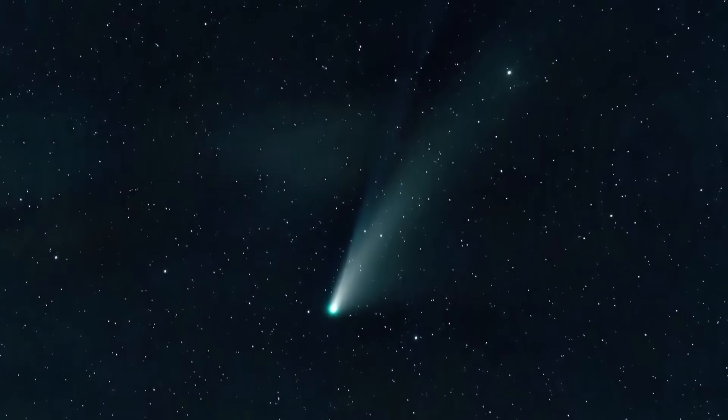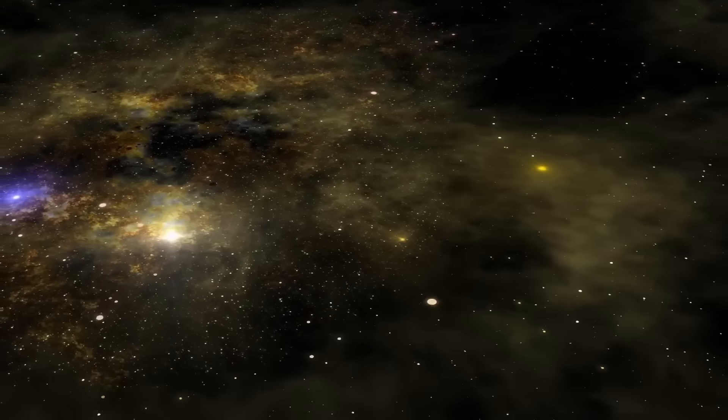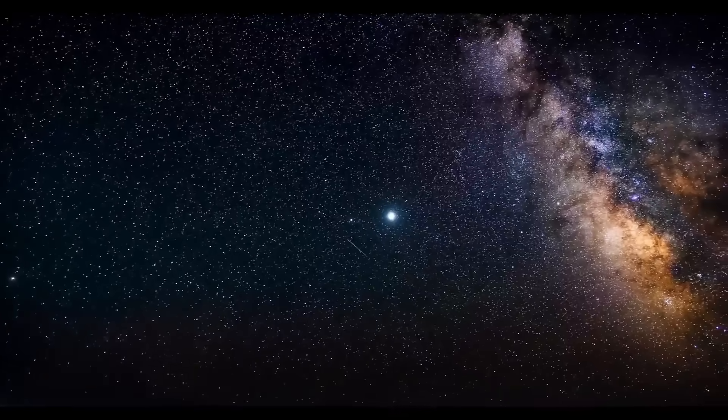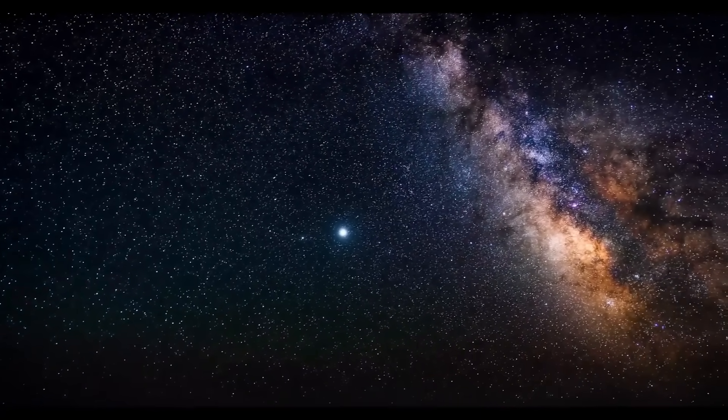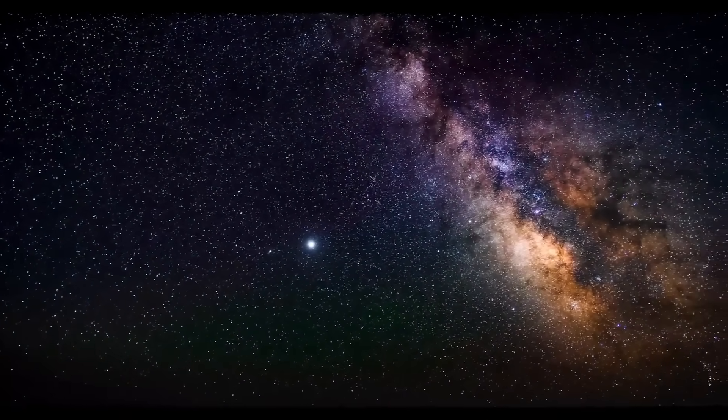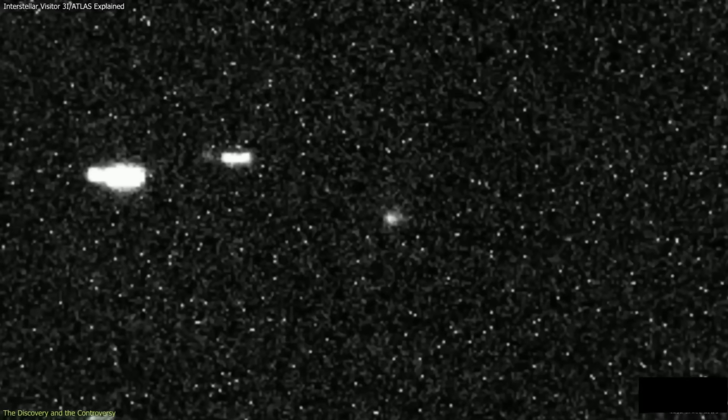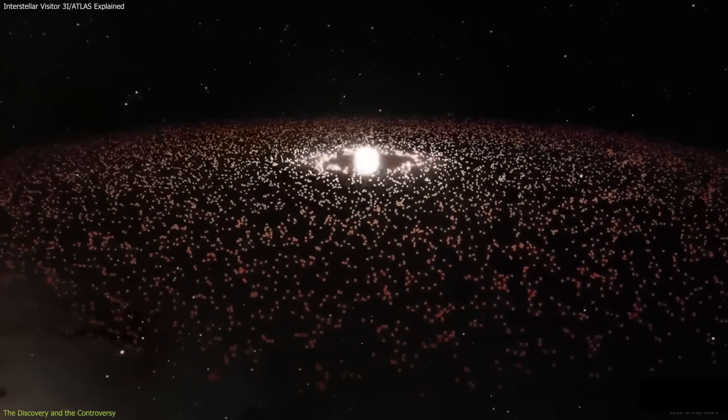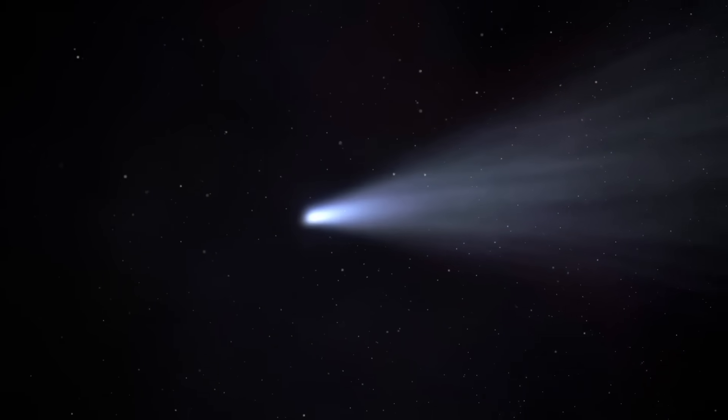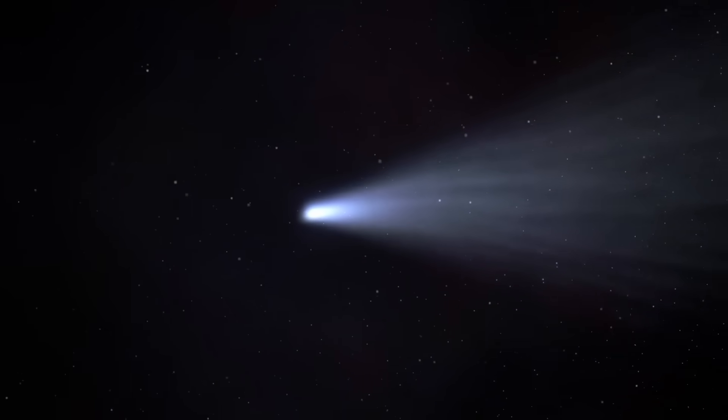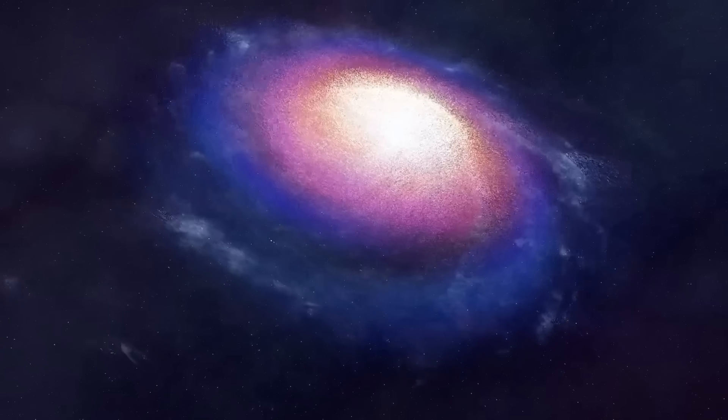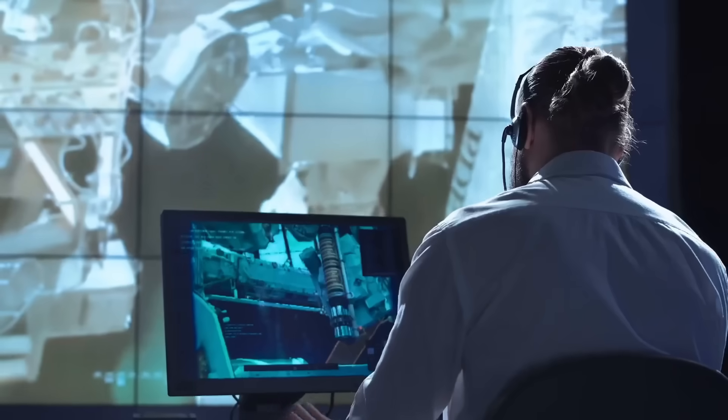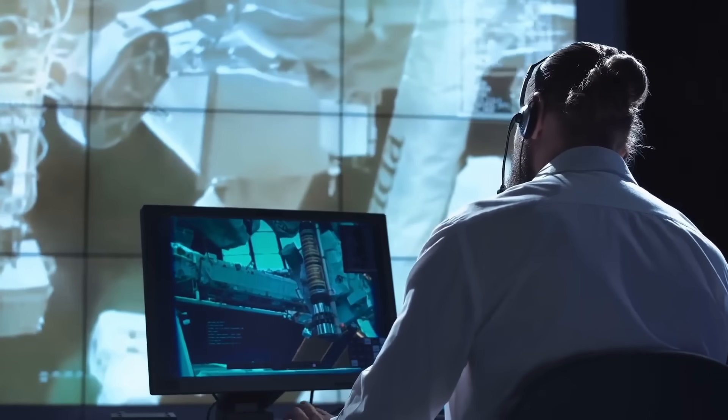Comets from our solar system tend to display a fairly well-understood palette—dust reflecting sunlight in neutral tones, water vapor producing faint blue emissions, and carbon compounds adding occasional green glows. But 3i Atlas was different. Its coma, the gas and dust cloud surrounding its nucleus, shifted from faintly reddish to a deep, luminous green. And this wasn't the ordinary green seen in some comets. The emission bands were stronger, sharper, and more dominant than usual. Observers began describing the glow as hostile, not because the comet posed an immediate danger, but because the light it reflected looked alien, uncomfortably unfamiliar, as if it were broadcasting a message no one could interpret.